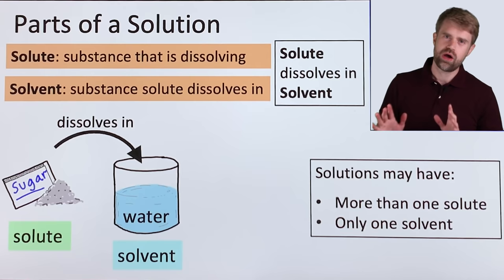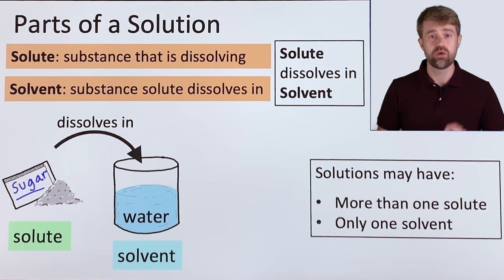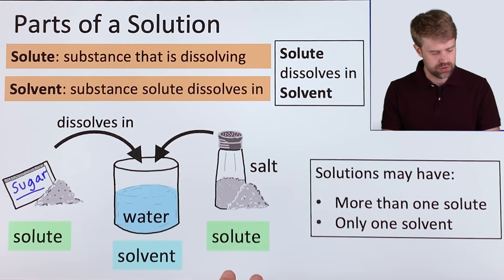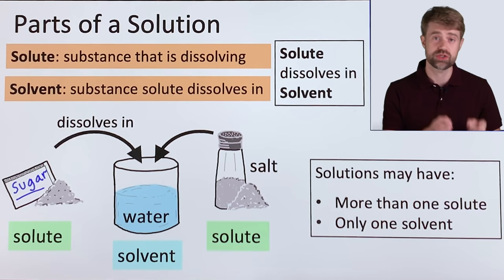Now a solution can have more than one solute, but it can only have one solvent. So for instance, we could take some salt and we could also dissolve that into the solution. So salt would also be a solute, along with the sugar, and we'd have two solutes, but the solvent is still just water.